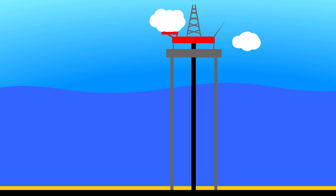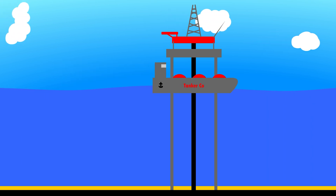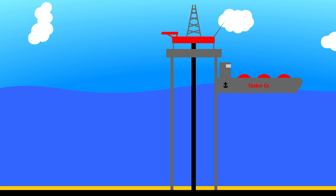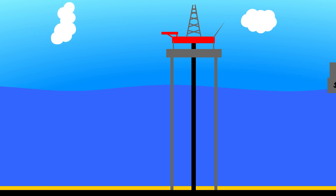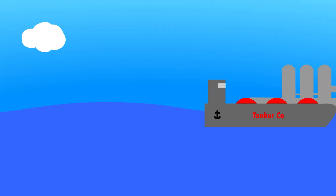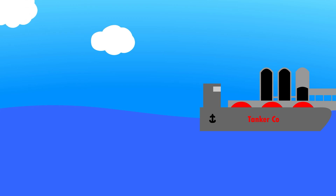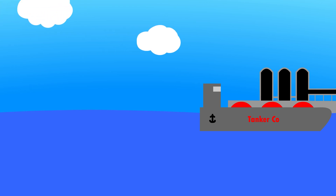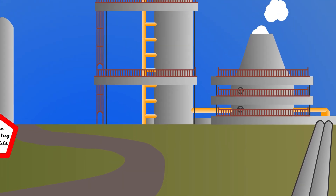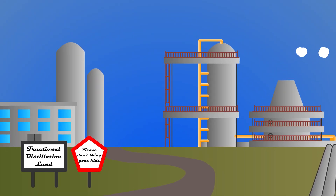Vast oil tankers then come to collect this oil and take it to land. The oil is delivered to pipelines which take it to fractional distillation plants. The role of a fractional distillation plant is to separate the crude oil into all of the useful fuels that it contains, so they can be used by different types of engine and power plant.